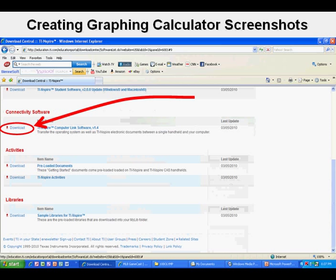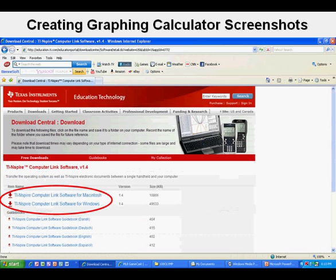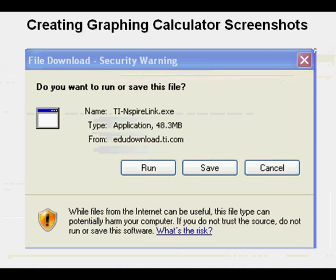Here's the page for the Connectivity Software under the TI Inspire. Then go to Download the Computer Link Software at the top left here. And from this screen, choose the version for Windows or Macintosh. I choose Windows. Here's the File Download dialog box. Press Run. You should be able to complete the installation from here.